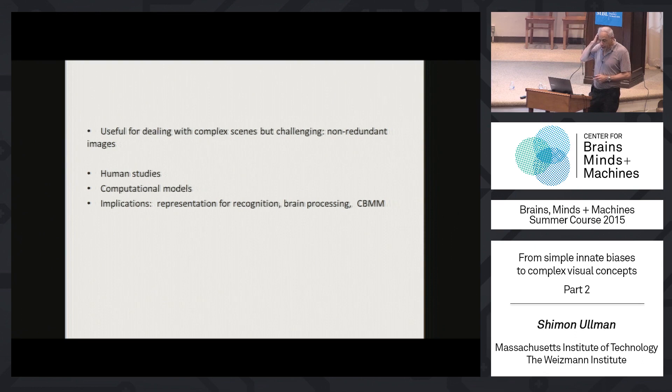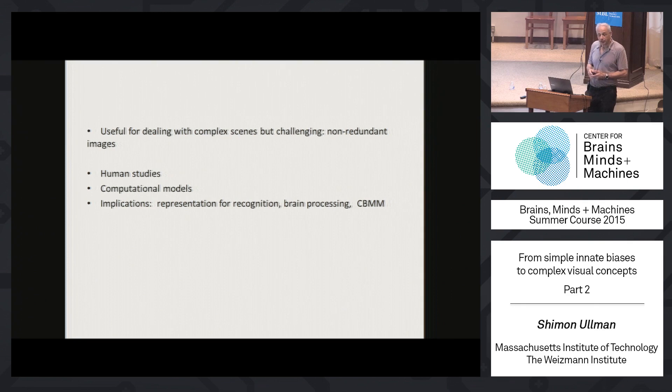I will show you some human studies. What we wanted to see is what are the sort of minimal images that people can still recognize. We examined some computational models, and it turns out that well-performing current schemes, including deep networks, cannot deal well with such minimal images. From this, I want to discuss some implications in terms of representations in our system, brain processing, and things like this.